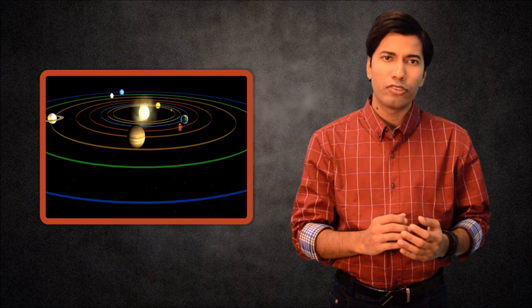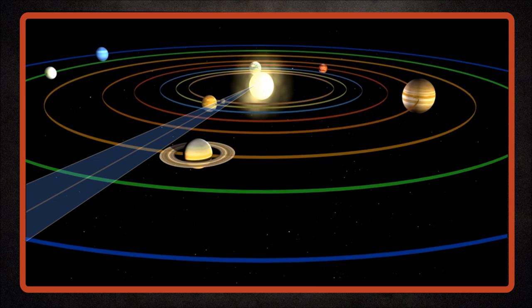Then to simplify the arithmetic, let's say that two planets will be considered to be lined up if they are within 1.8 degrees of each other.